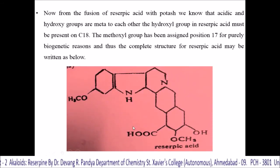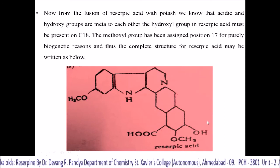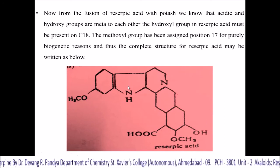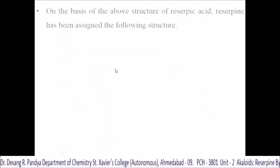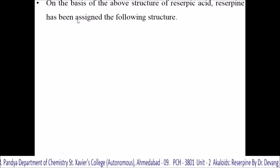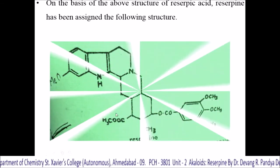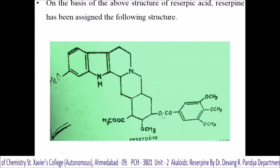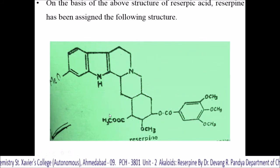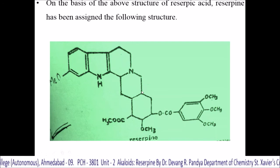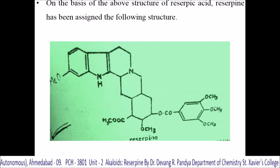This is the complete structure of reserpic acid where the carboxylic group, hydroxyl group, and two methoxy groups are present. On the basis of this structure of reserpic acid, reserpine has been assigned a structure in which the carboxylic linkage is converted into an ester, and another ester is also present — that is why reserpine is known as the diester of these two skeletons.